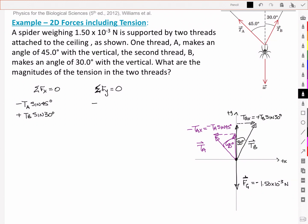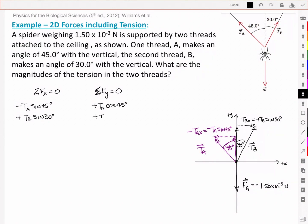For the y components I've got a positive Tb cos of 45 degrees. But don't forget I've got the weight acting downwards. That's why I've got a negative Fg.